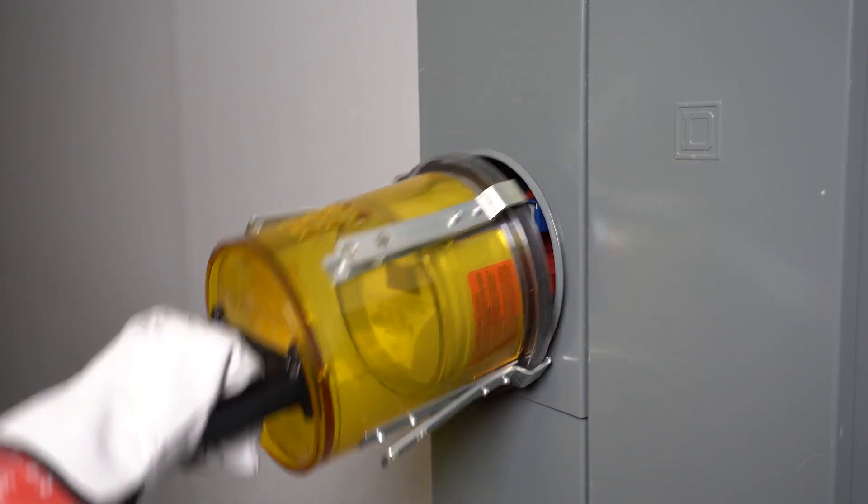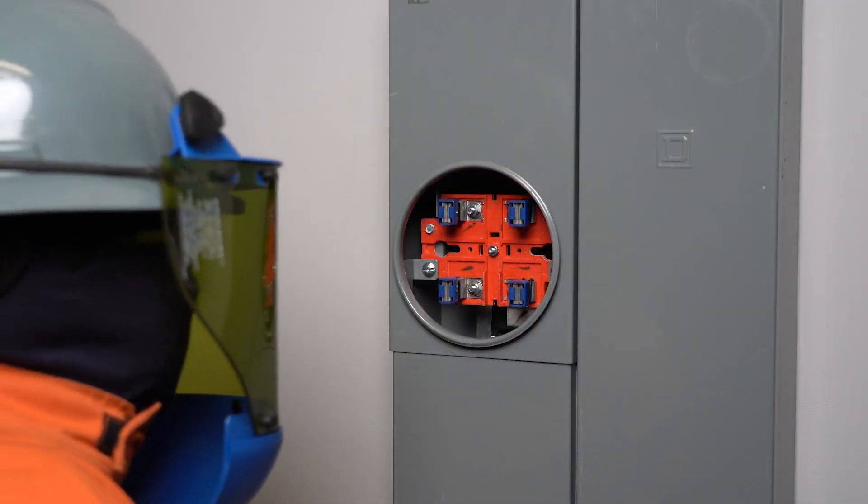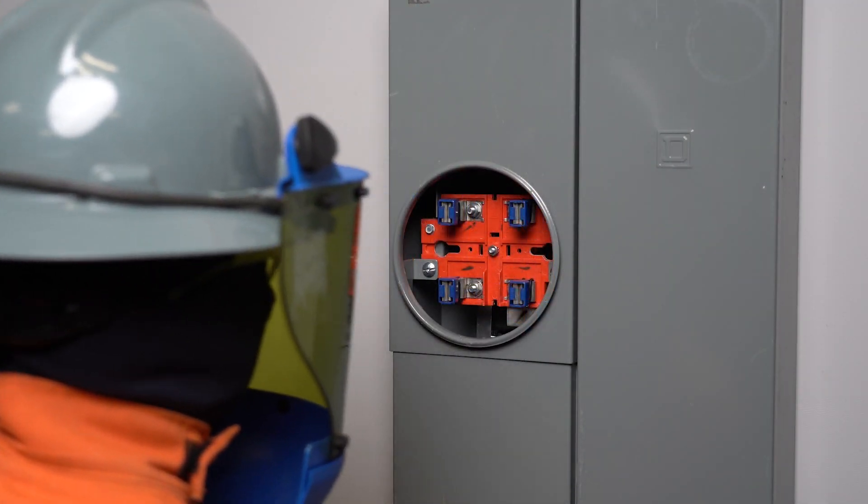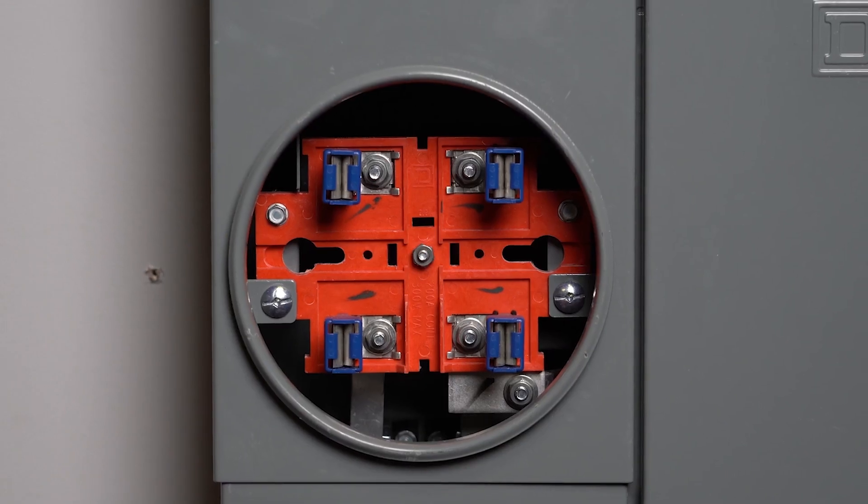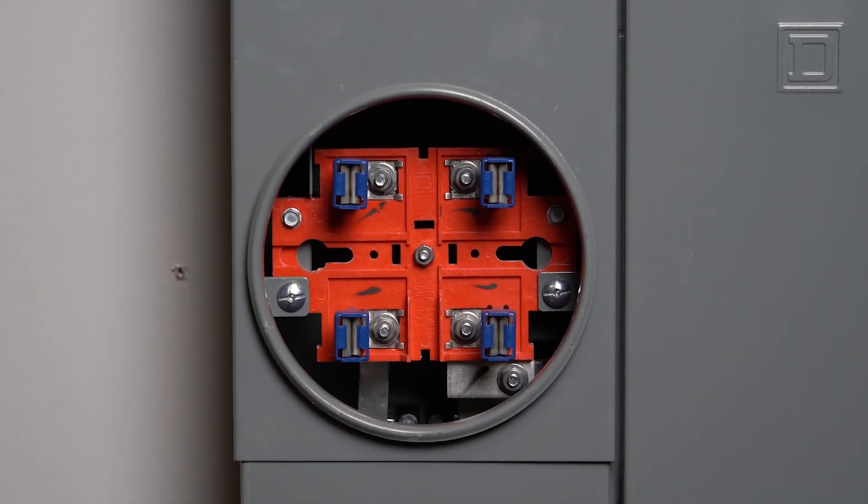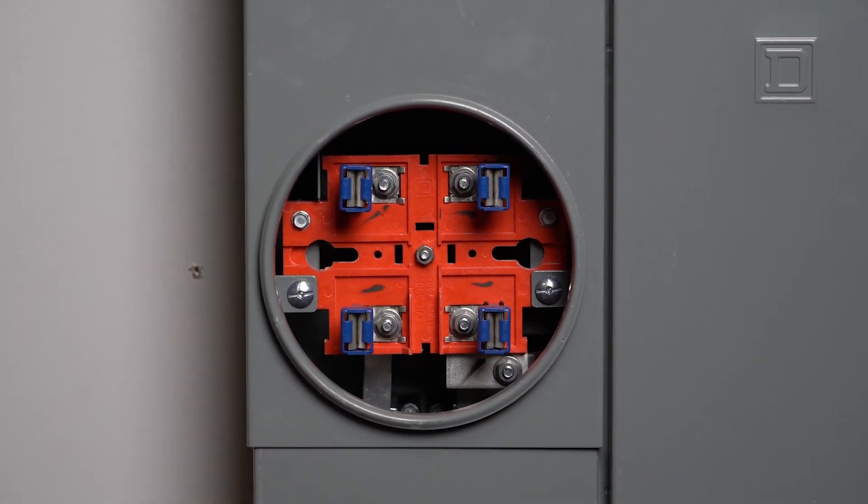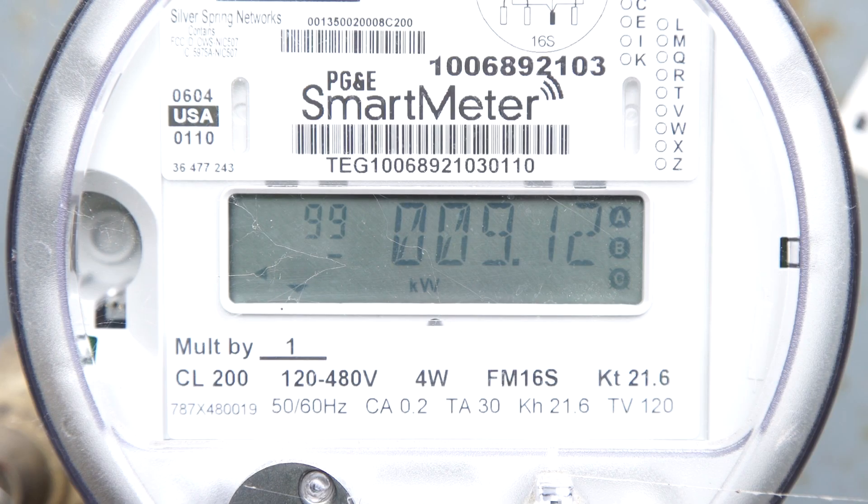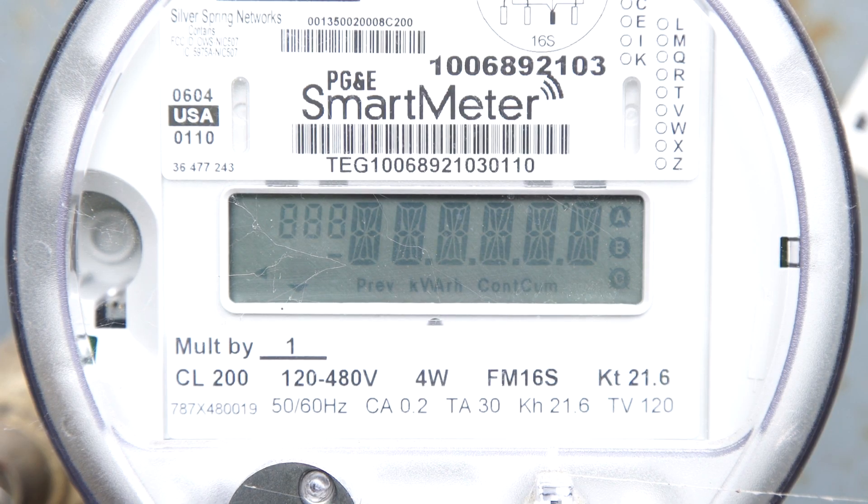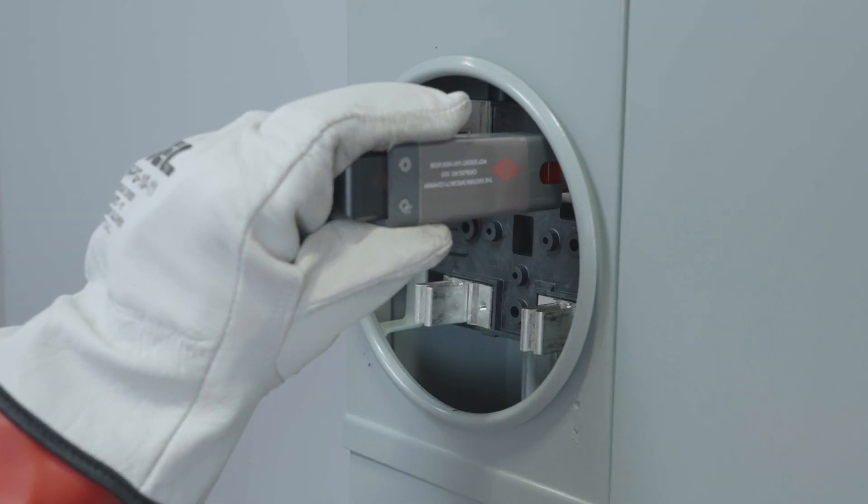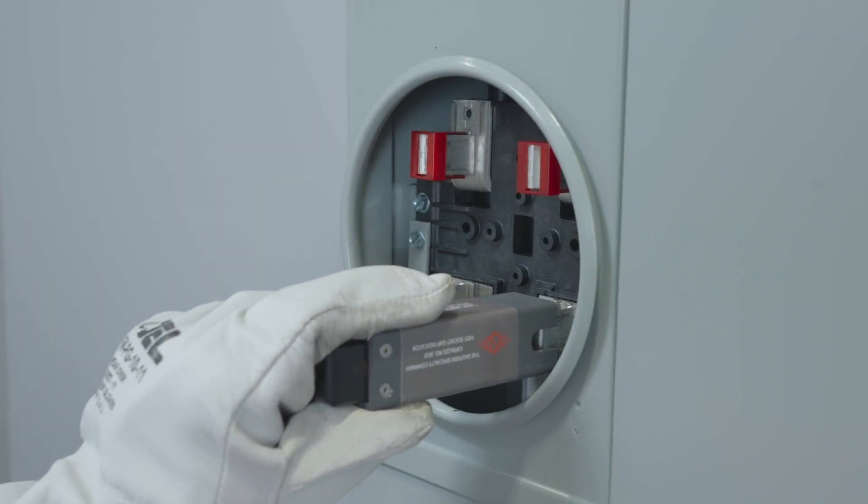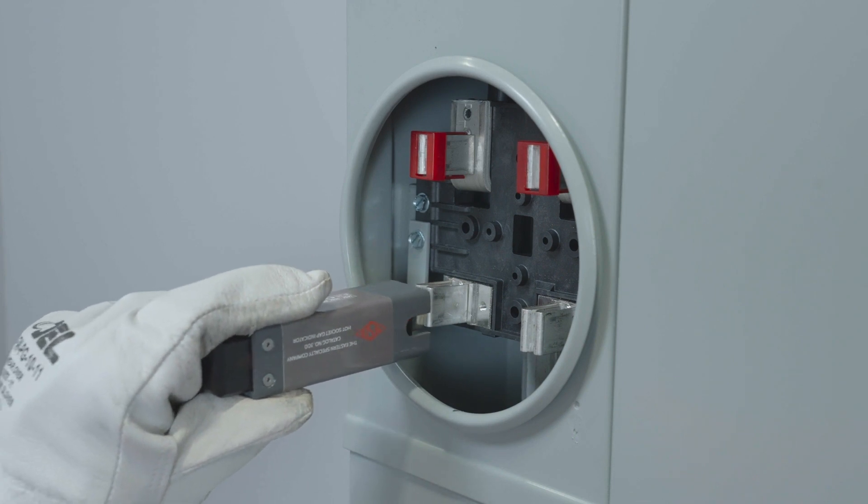Before installing Backup Switch behind the utility meter, ensure the meter socket is in good condition and is compatible with Backup Switch. Note that Backup Switch can only be installed in Type 2S meter sockets. Inspect the meter to confirm there are no signs of damage, arcs, or misalignment of the blades. Tesla recommends the use of a hot socket gap indicator tester to verify the integrity of the meter socket jaws.